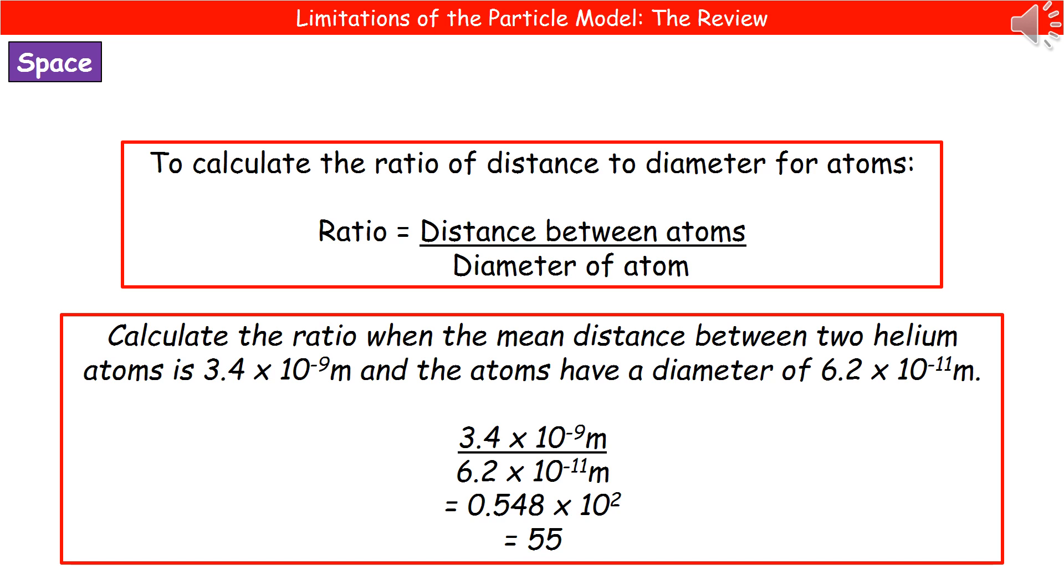So the distance between the atoms is 3.4 times 10 to the minus 9 and divide that by the diameter of the atom, 6.2 times 10 to the minus 11.